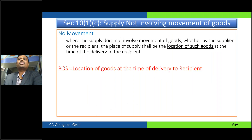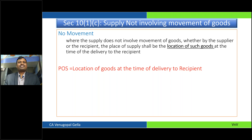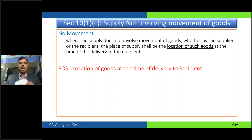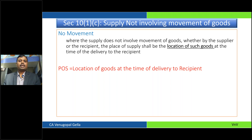Whenever there is no movement of goods, the place of supply would be wherever the location of the goods at the time of delivery to the recipient. Imagine a case — you have taken something on hire purchase and after some time you want to keep the goods. At the time of supply, there is no movement. So the place of supply would be wherever the location of the goods at the time of delivery to the recipient.